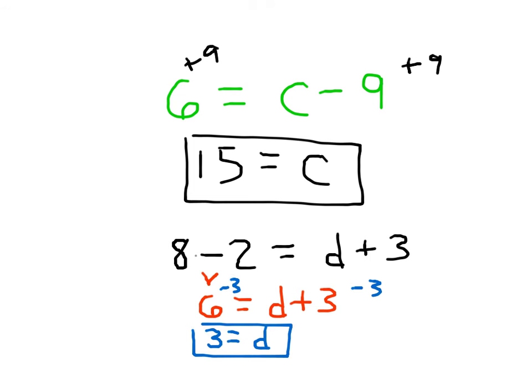Looking back at my original equation, 3 plus 3 is 6. And 6 equals 8 minus 2, which is also 6. Again, remember, what you do on one side of the equation, you must do to the other side as well. Thank you so much.